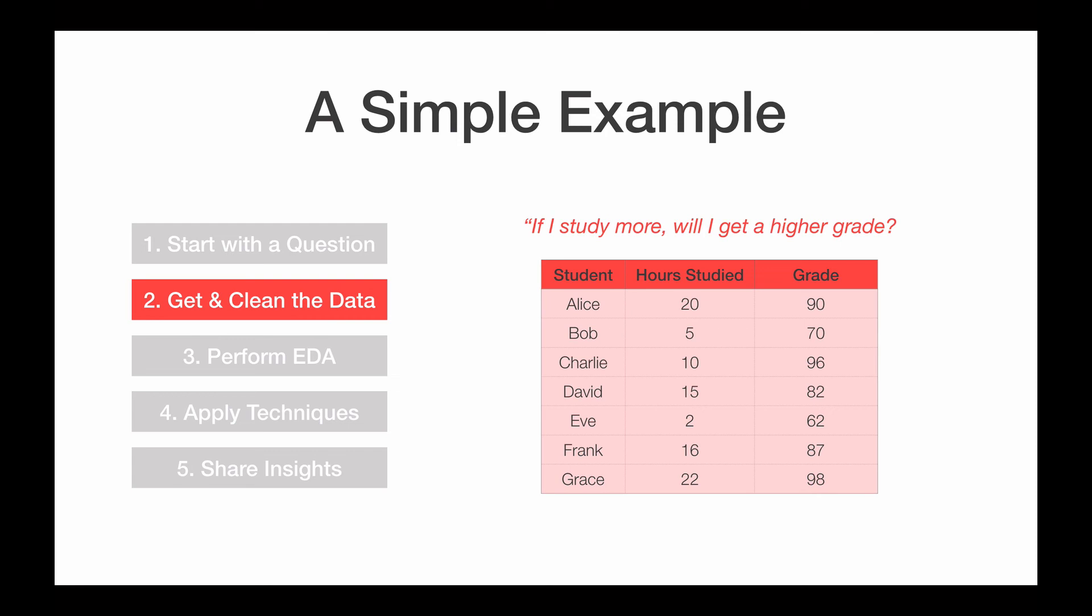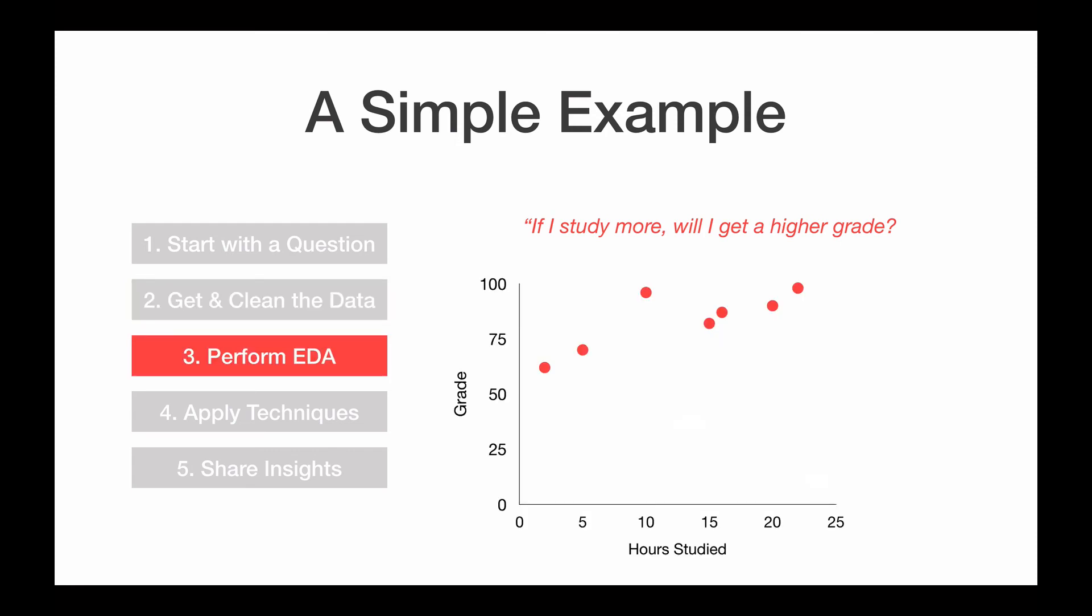So the next step is to perform EDA, or exploratory data analysis. So a very popular way to do EDA is to take your data and visualize it. So in this case, I've taken that hour studies and grade data, and I've put it on this plot. So instead of trying to understand a table, I can easily look at this visualization and see what's happening. And here, you can see that first of all, there's a trend, right? There's an upward trend. The more you study, the higher grade you'll get. And also, there's one person who's doing much better than everyone else. So this person was Charlie. And Charlie didn't study that much, but he got a pretty high grade. So I was able to find all that out just from doing EDA. I haven't even used any data science techniques yet.